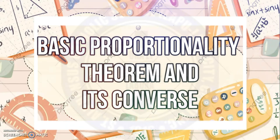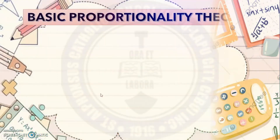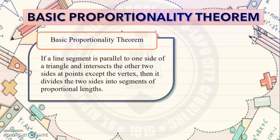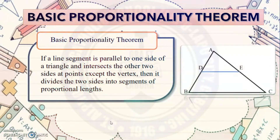What is the Basic Proportionality Theorem and what is its converse? We are going to answer those questions today. The Basic Proportionality Theorem states that if a line segment is parallel to one side of a triangle and intersects the other two sides at points except the vertex, then it divides the two sides into segments of proportional lengths. For example, given triangle ABC with segment DE,